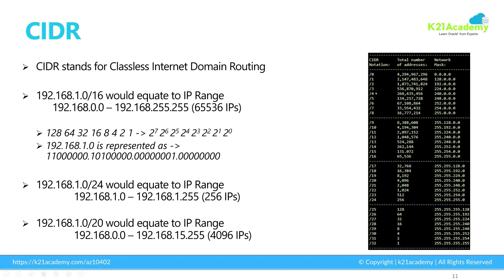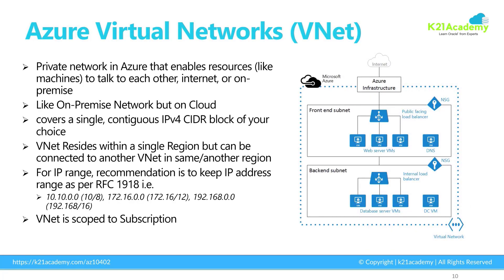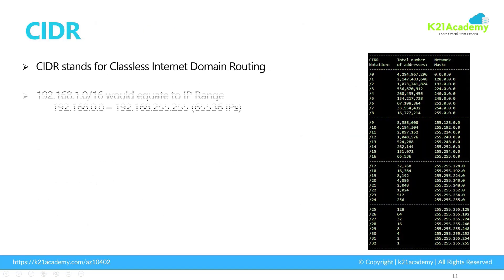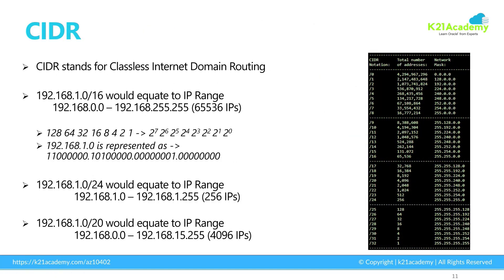This is the CIDR we're going to use when we create a virtual network in Azure. With that theory covered, let's go and see how to create this network. I'm going to create a virtual network, and inside that there will be something called a subnet — we'll see that when we get to that point. So let me go to the Azure portal.